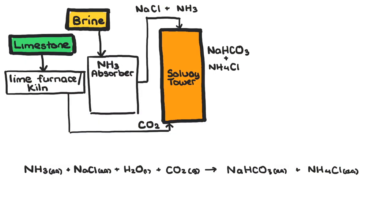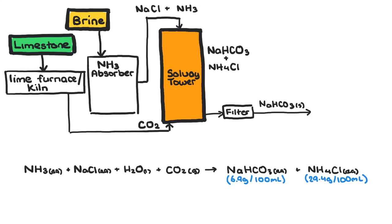As this process is carried out at zero degrees Celsius, sodium hydrogen carbonate is much less soluble in water than ammonium chloride. Therefore, much of the sodium hydrogen carbonate crystallizes as a solid, leaving the ammonium chloride in solution. This solid sodium hydrogen carbonate is then separated using fractional crystallization.